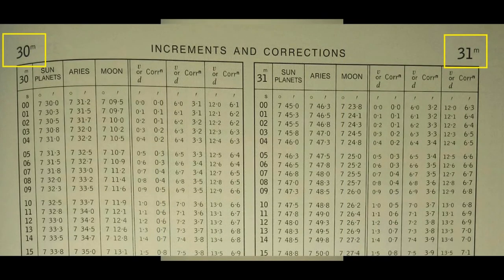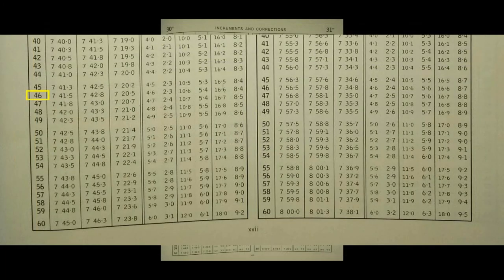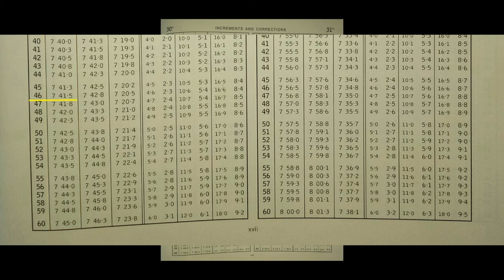On the upper corners of the page is the number of minutes. In this example, 30 minutes is located on the upper left corner of the page. Within this column are the number of seconds — here is 46 seconds. On the right of 46 seconds is the Sun and Planet column. Under the Sun and Planet column, in line with 46 seconds, copy the given value, which is 7 degrees and 41.5 minutes. This is the increment value of 30 minutes and 46 seconds.